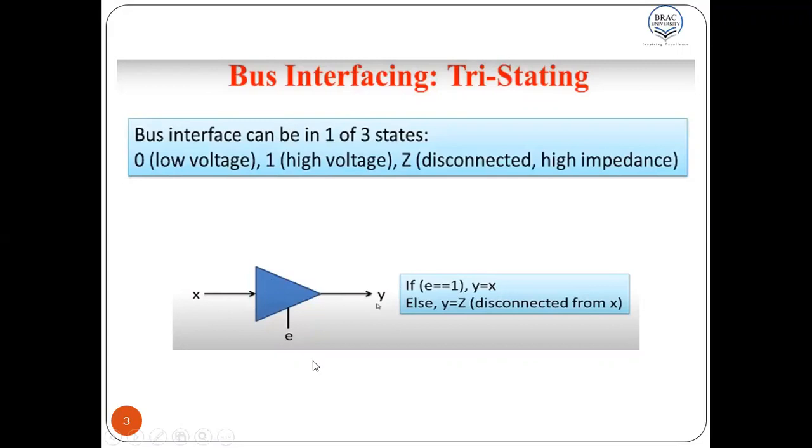In either case, we have a logic enable line that represents as E and if equal 1, Y takes the value of X. Otherwise, Y is disconnected from X, that means Y equals Z.